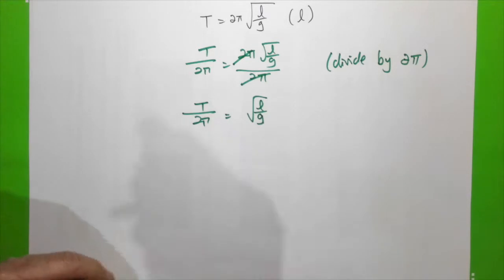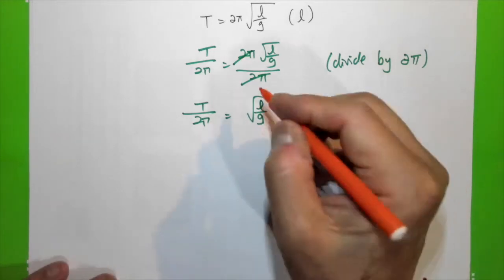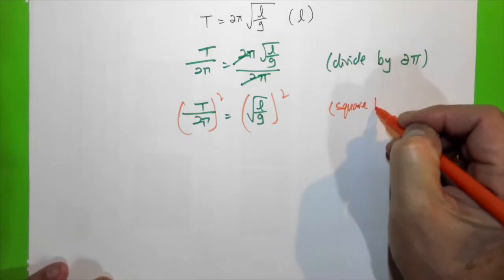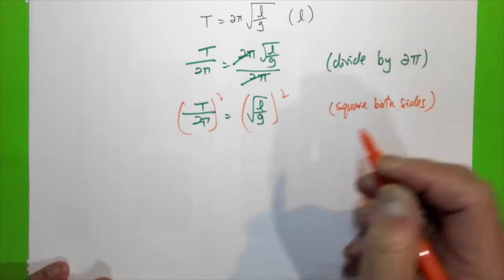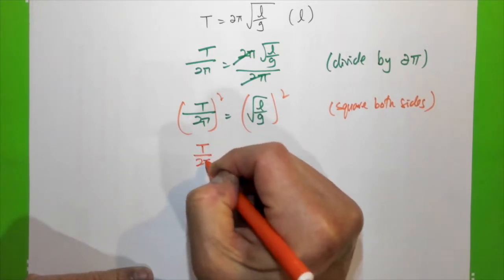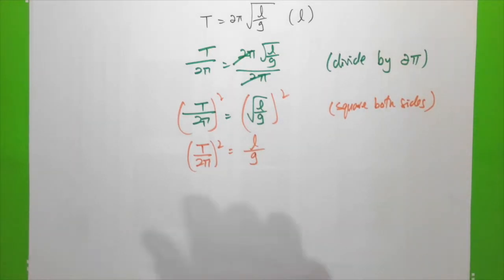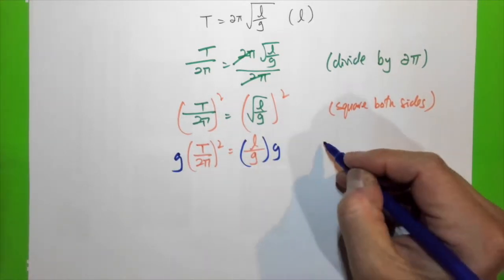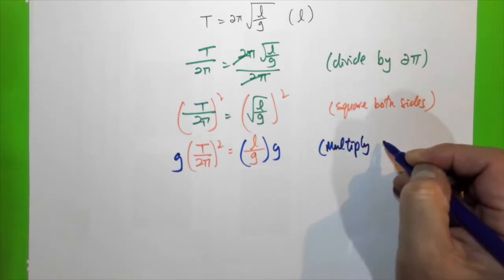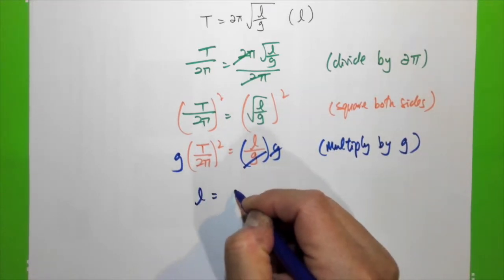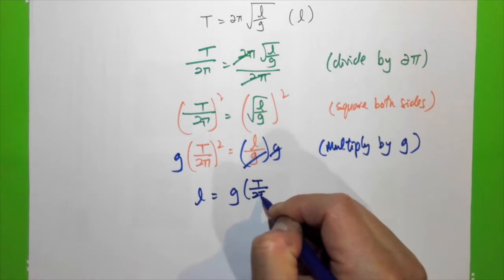Now I need to eliminate the square root by squaring both sides. Therefore (T over 2π)² equals l/g. In order to eliminate g, I multiply both sides by g. Therefore l equals g·(T over 2π)².